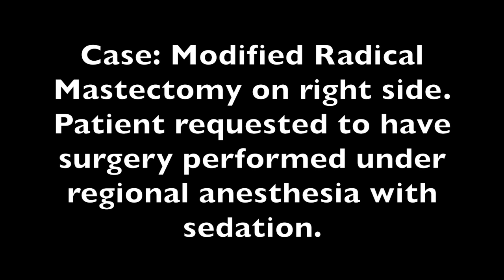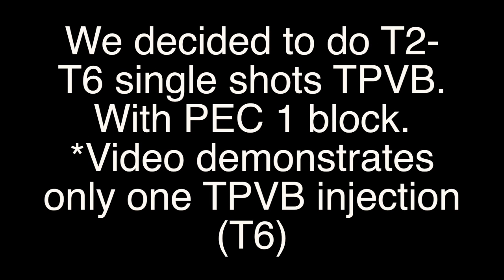Modified radical mastectomy on the right side. The patient requested surgery under regional anesthesia with sedation. We decided to perform T2 through T6 single-shot thoracic paravertebral blocks (TPVB) with a PEC 1 block. This video demonstrates only one TPVB injection.